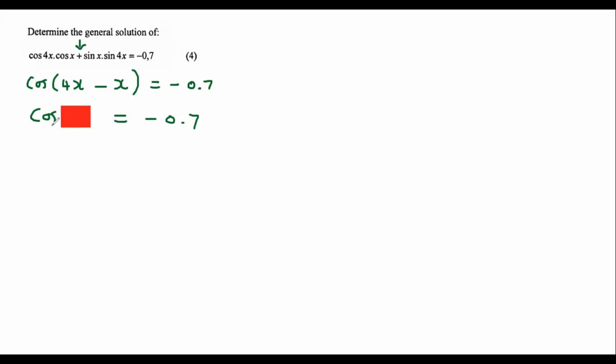What matters is that we have to get the reference angle. So you say the reference angle equals, and now this is the part where you put on your calculator shift cos. And then most schools in South Africa, you are not going to put the negative on the calculator. You're going to keep it as a positive 0.7.